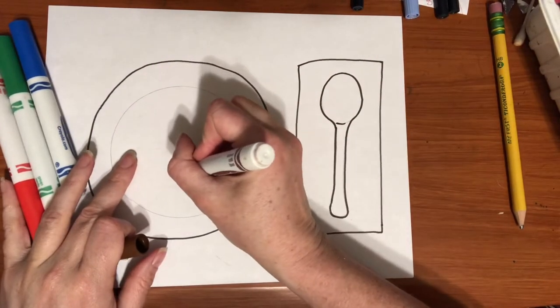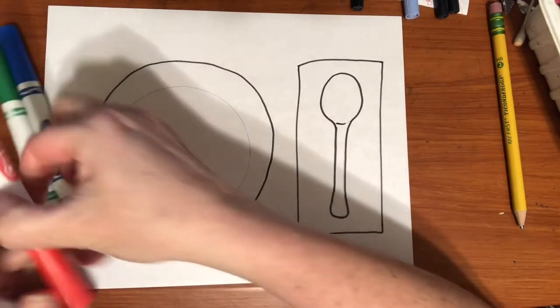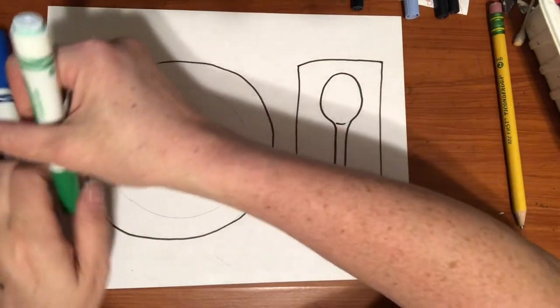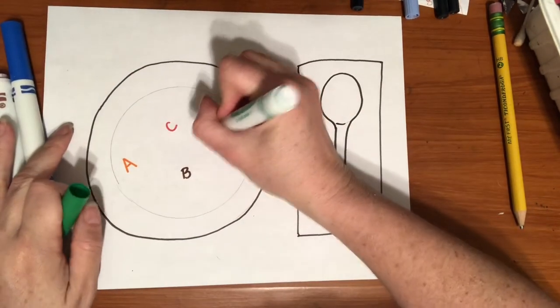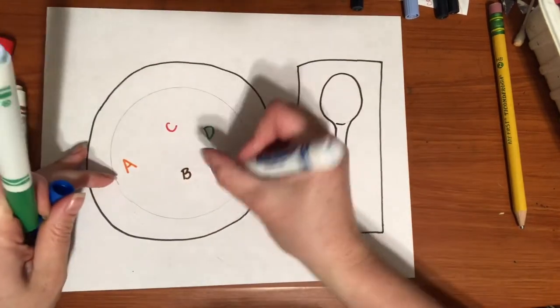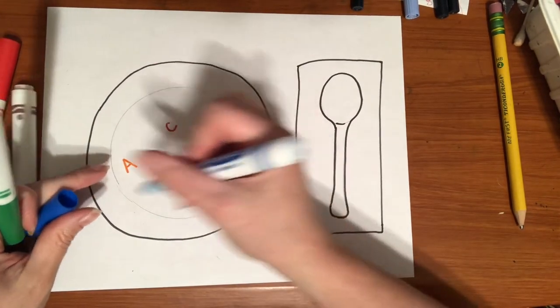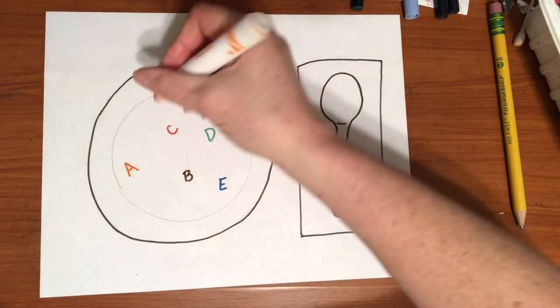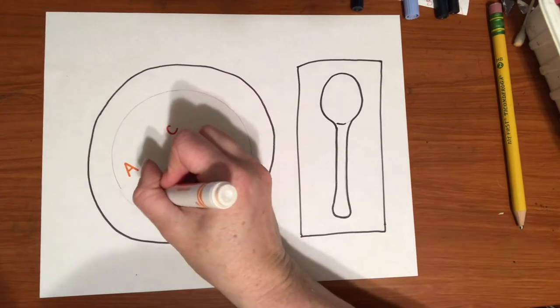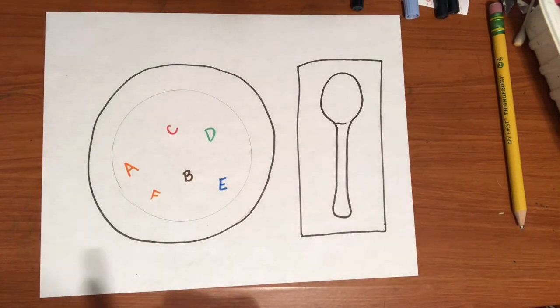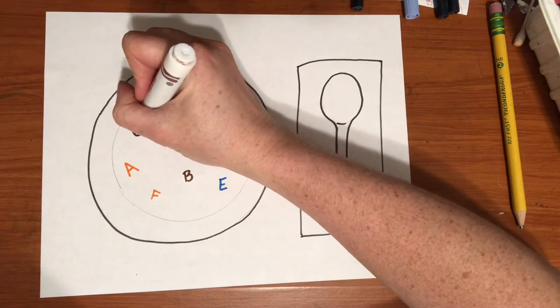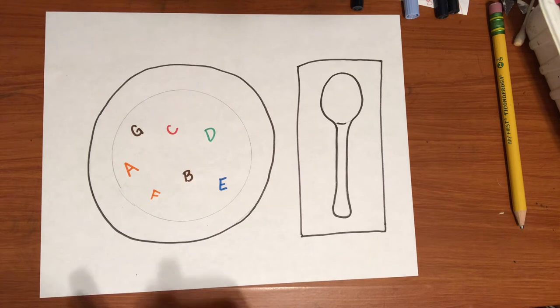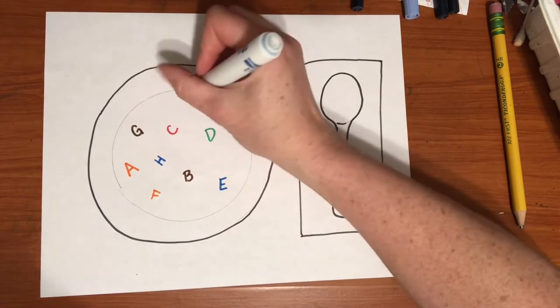Alright. A, B, C, D, E, and I'm just gonna kind of go around. F, G, H, I.